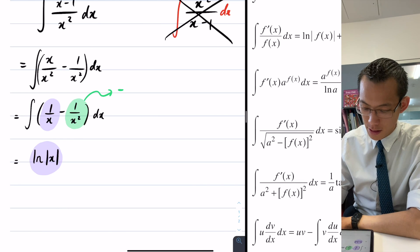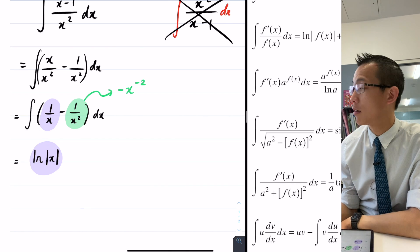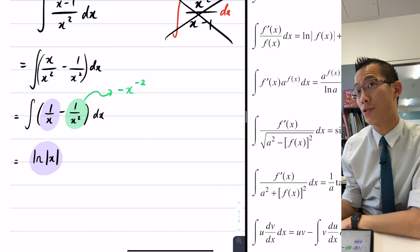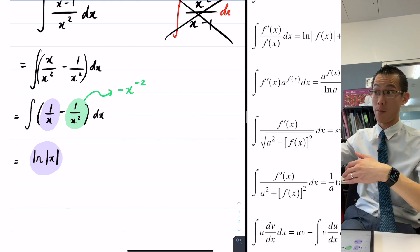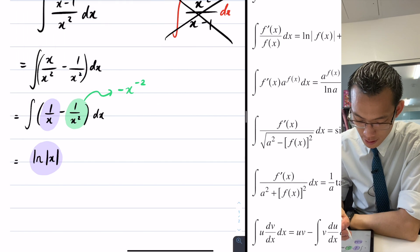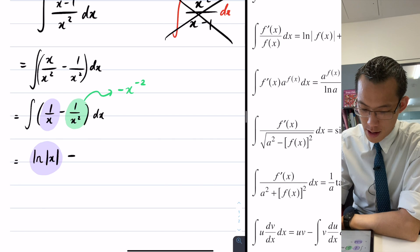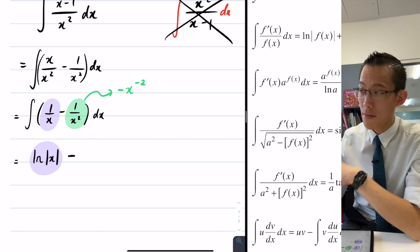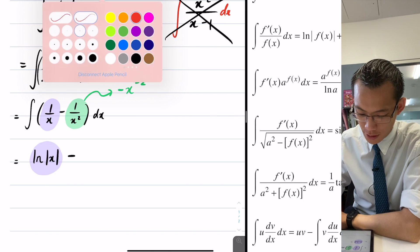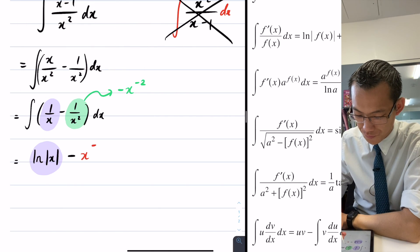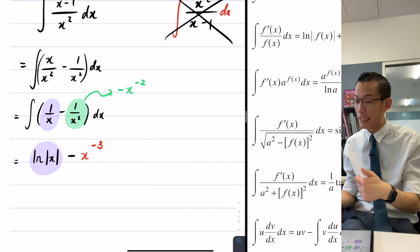I should have done this earlier, but I should have rewritten this with a negative index. So it's actually minus x to the minus 2 because this doesn't end up as a log, I can think about this guy just as a regular polynomial and do that thing with increasing the power, divide by the new power. So help me to do that.